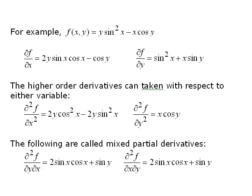Here's an example which makes things a little clearer. We have a function of two variables. You can take the first partial with respect to x by considering y to be a constant. So when y is a constant, the derivative of the first term is 2y sine x cosine x, just using the chain rule on the term sine squared x.